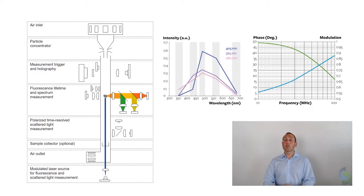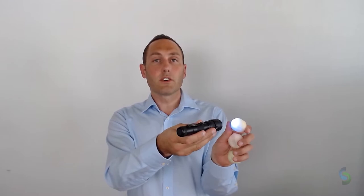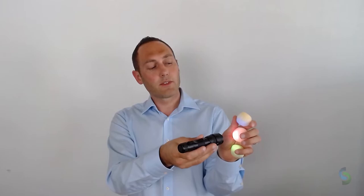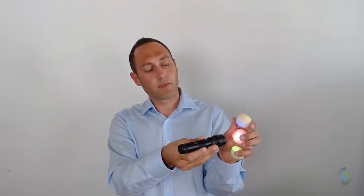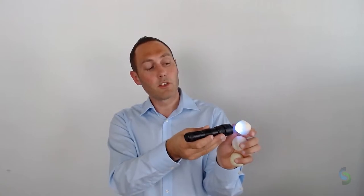For those of you who are not so familiar with fluorescence, I will show how the principle works. Many materials absorb UV light and emit it again at different wavelengths. Depending on the chemical composition of the particle, a different color is emitted which is characteristic. As you can see here, each of the 3D printed pollen grains emits light in a different color, although excited with exactly the same UV light source.